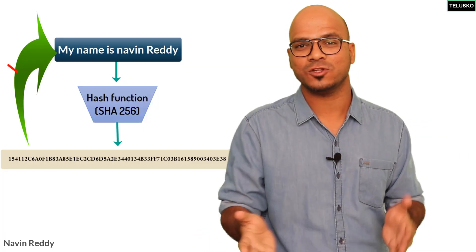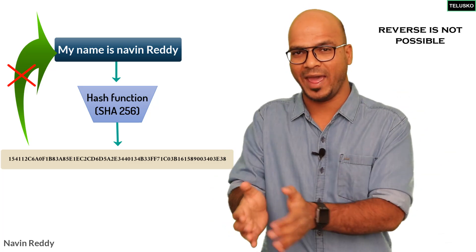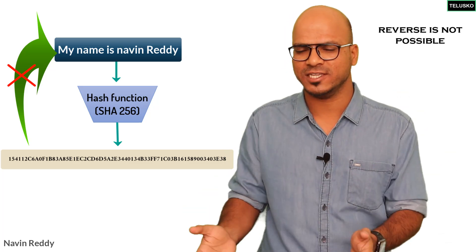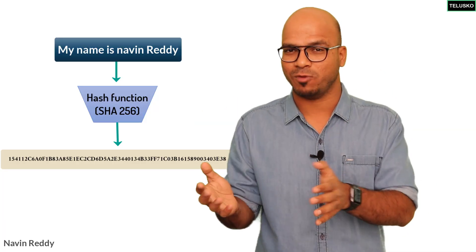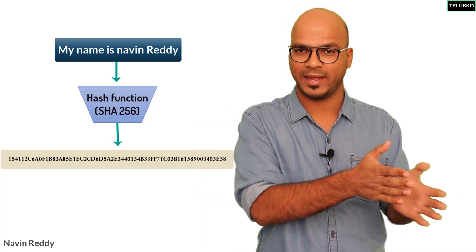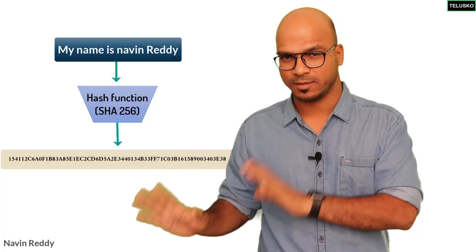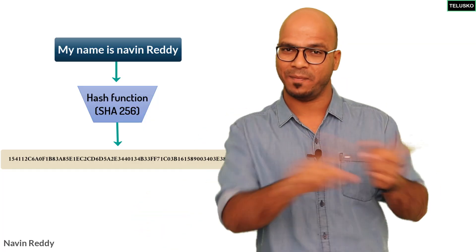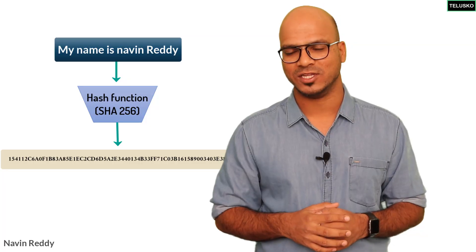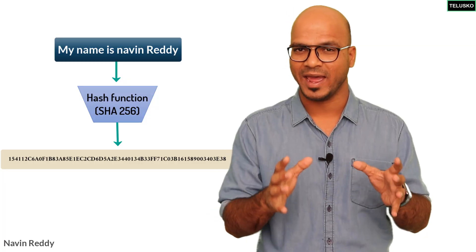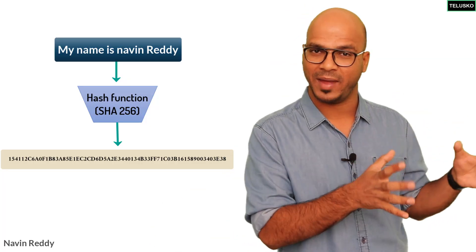The third amazing thing is you cannot get the actual input back from the hash value — the reverse is not possible. Of course we can convert data into a hash, which is easy to do, but it is very difficult — in fact almost impossible — to go back.